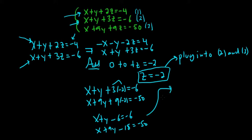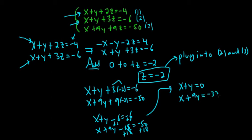Rewriting one more time — we add 6 to both sides of the first, so we get x plus y equals zero. And here we add 18 to both sides, so we get x plus 9y equals negative 32.